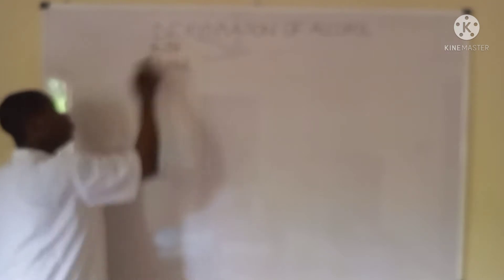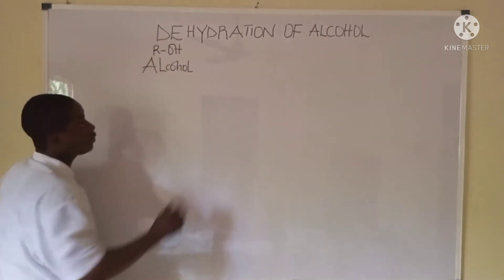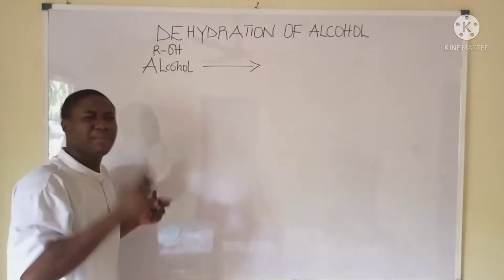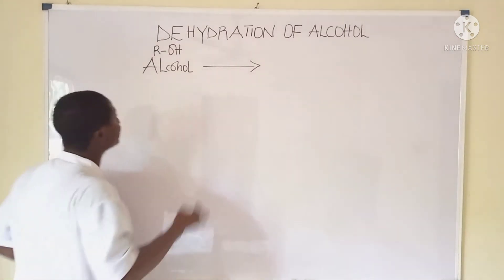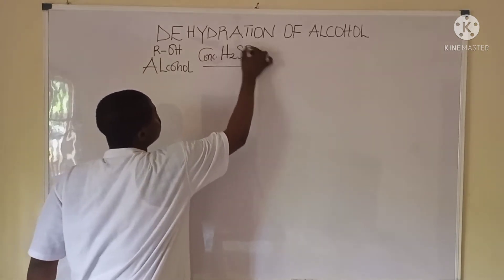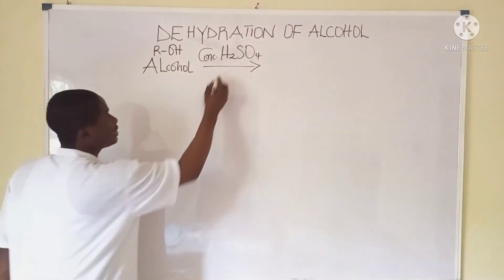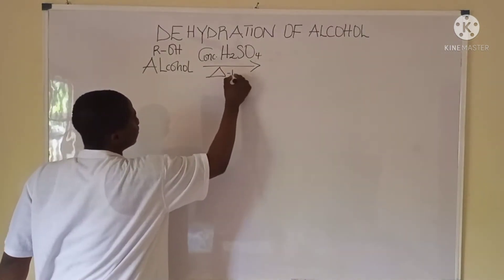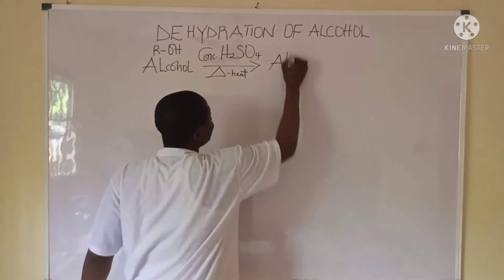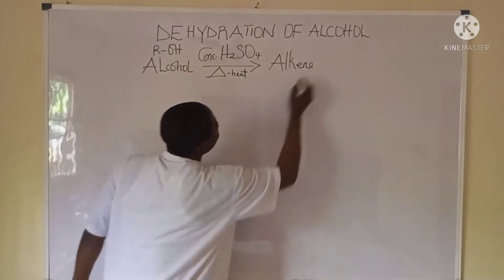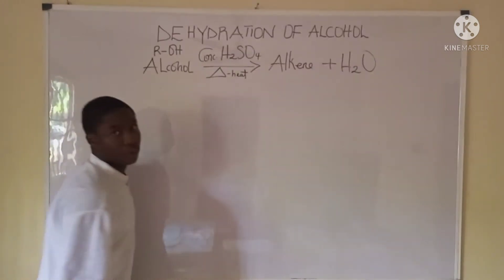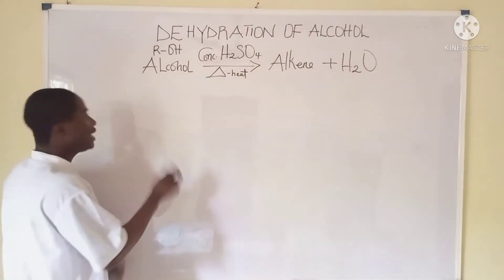The functional group is the hydroxyl group (-OH), which signifies the alcohol. For dehydration of alcohol, it works in the presence of the dehydrating agent, which is concentrated sulfuric acid (H₂SO₄), and also in the presence of heat. When this reaction happens, we get the alkene and also removal of water (H₂O).